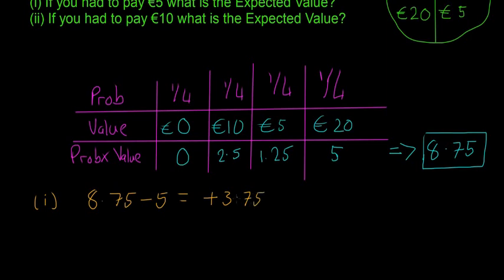So hopefully that makes sense: on average you're getting 8.75 back, you have to give 5 euro every single time without fail, and so on average your expected value—EV—is plus 3.75. Okay, so in this case it's a good game and you would want to play it because you'd be making money.